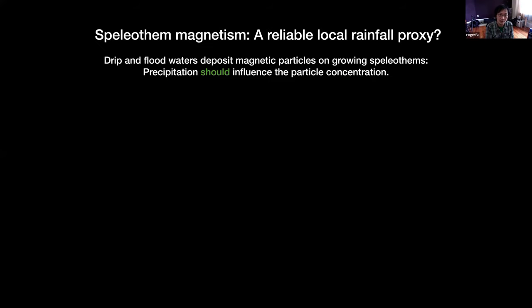What we want and hope for out of a speleothem magnetism proxy is that it's a targeted proxy of just local precipitation — that it responds as purely as possible just to local precipitation. This kind of makes sense, since we know that water is responsible for depositing magnetic particles on speleothems, so changes in local precipitation and the amount of moisture available should influence the particle concentration.